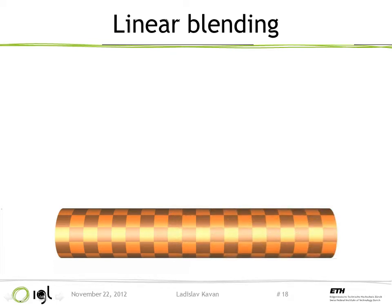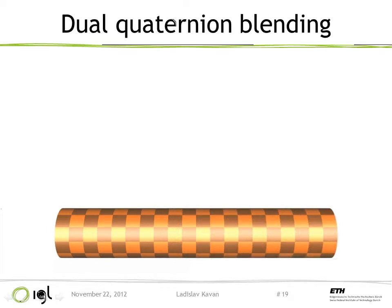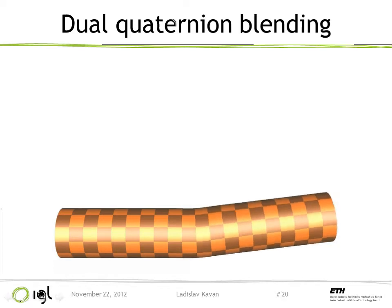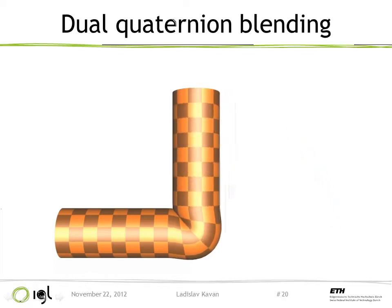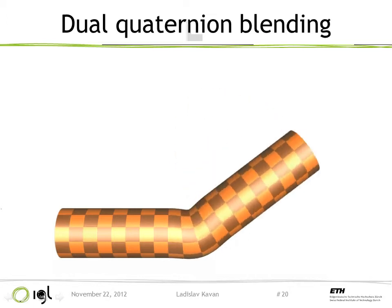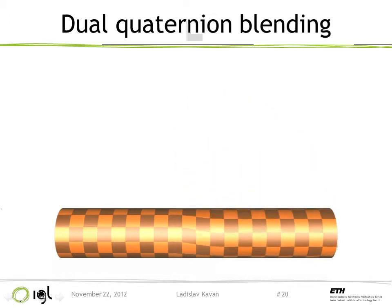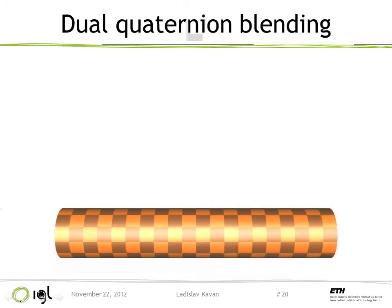We know that we can fix these artifacts by switching to dual quaternion blending. Dual quaternions have the bulging issue I mentioned before, but on twist they produce what we would expect — they preserve the distance from the center of the cylinder.